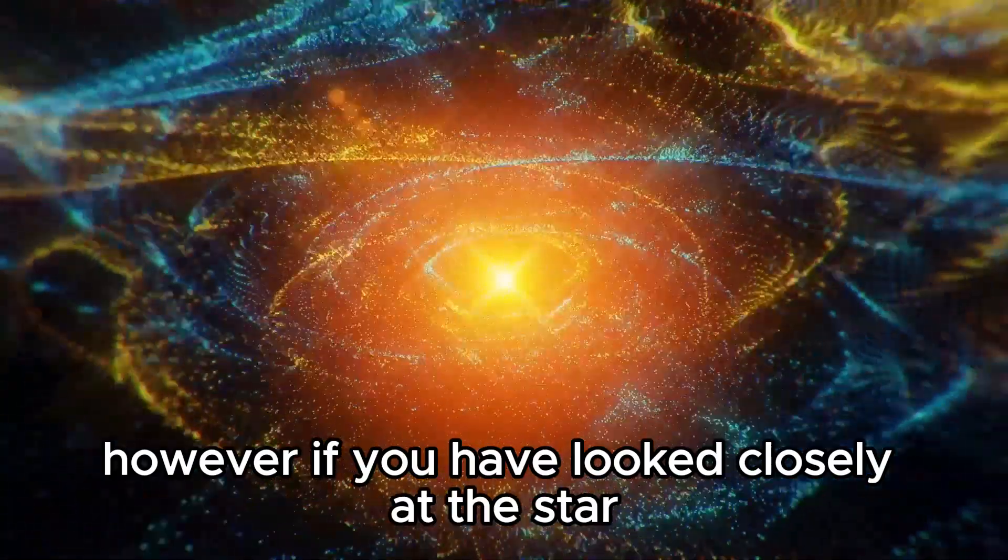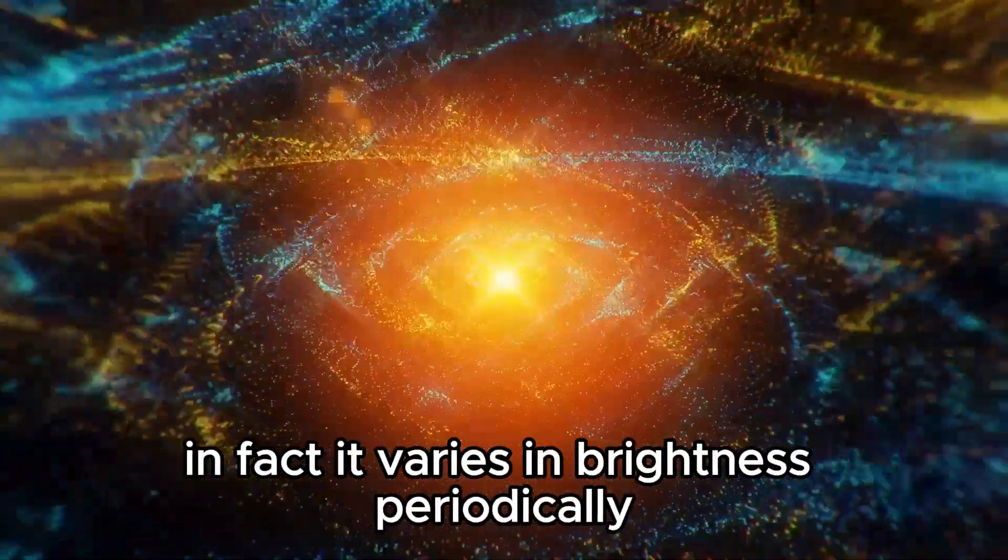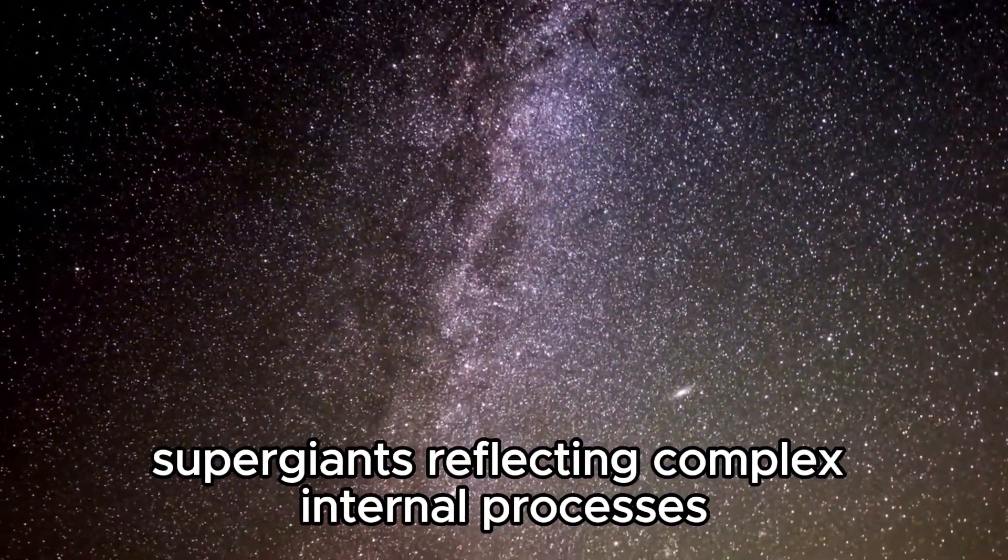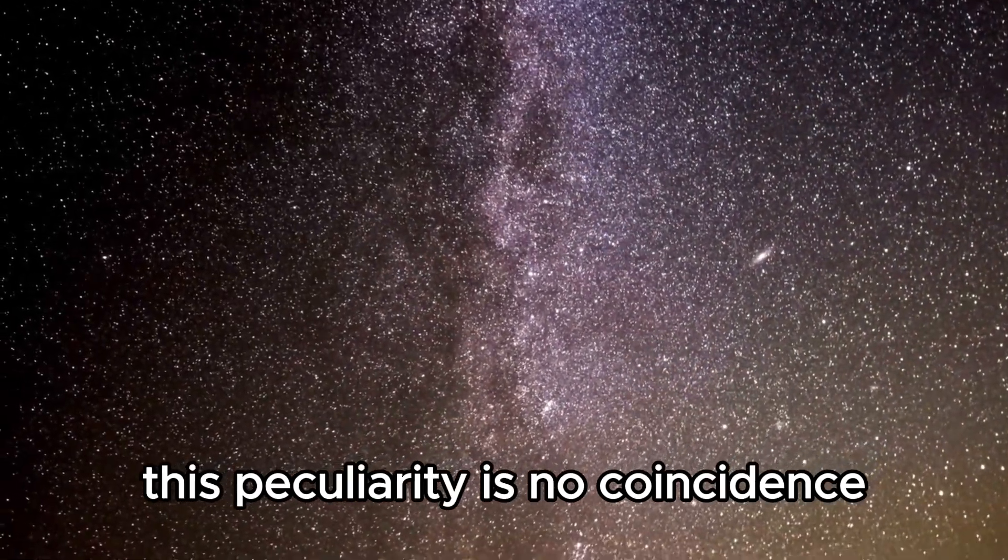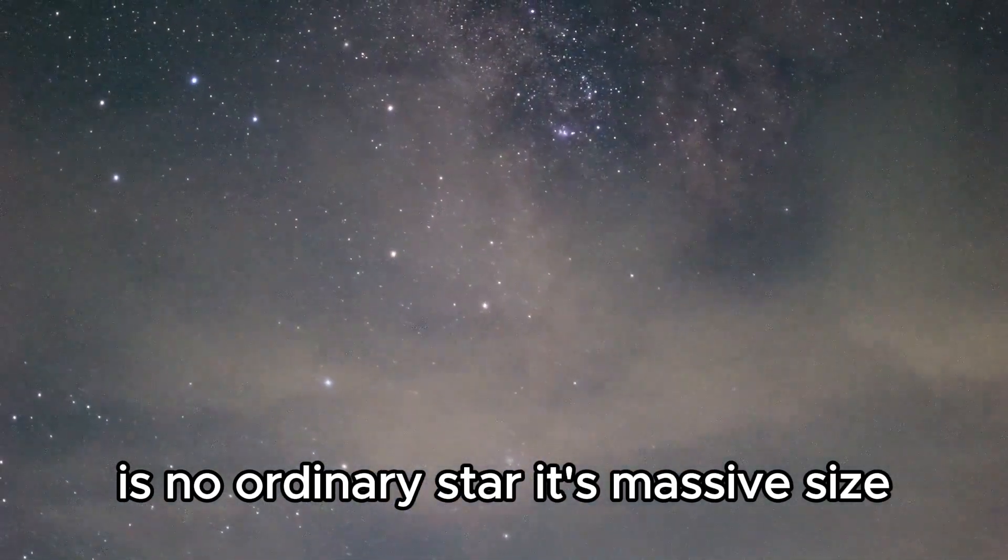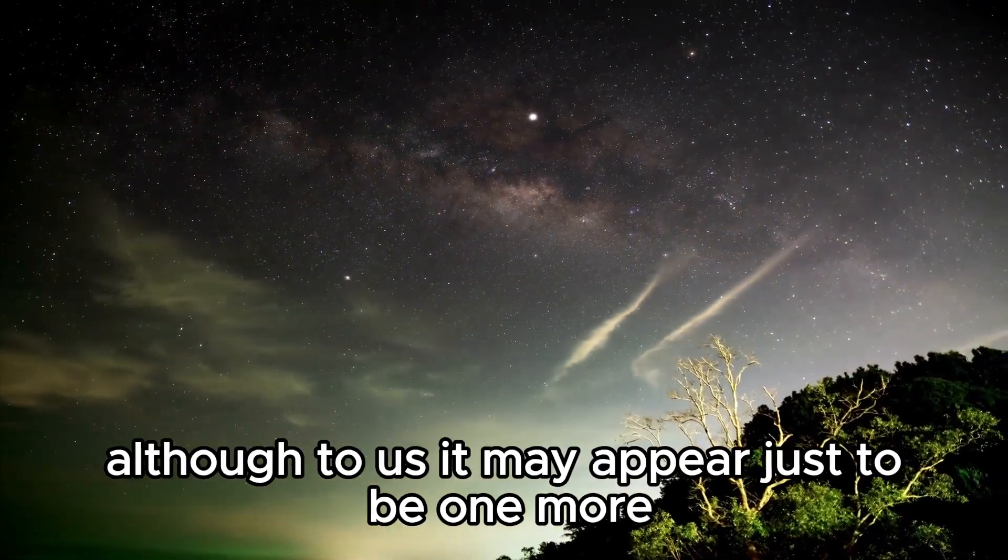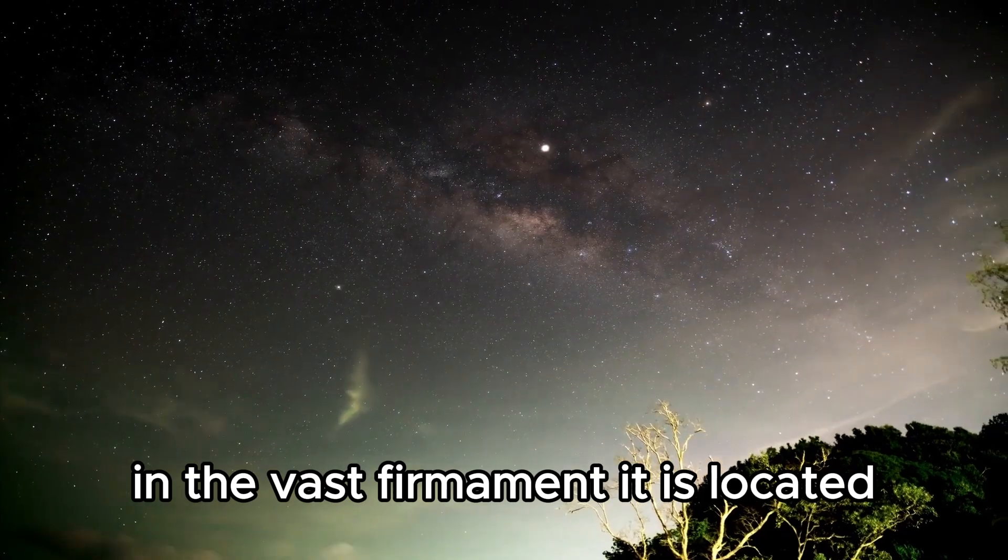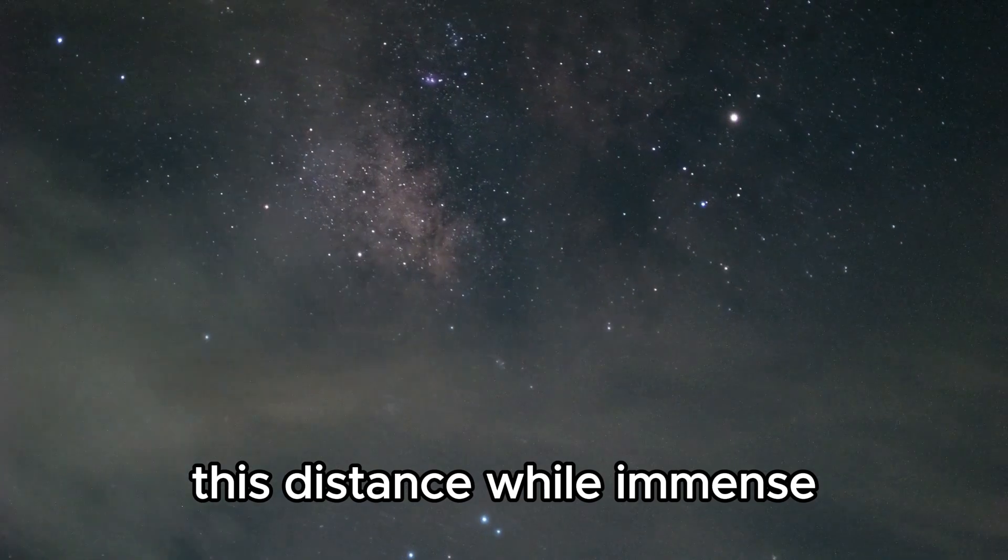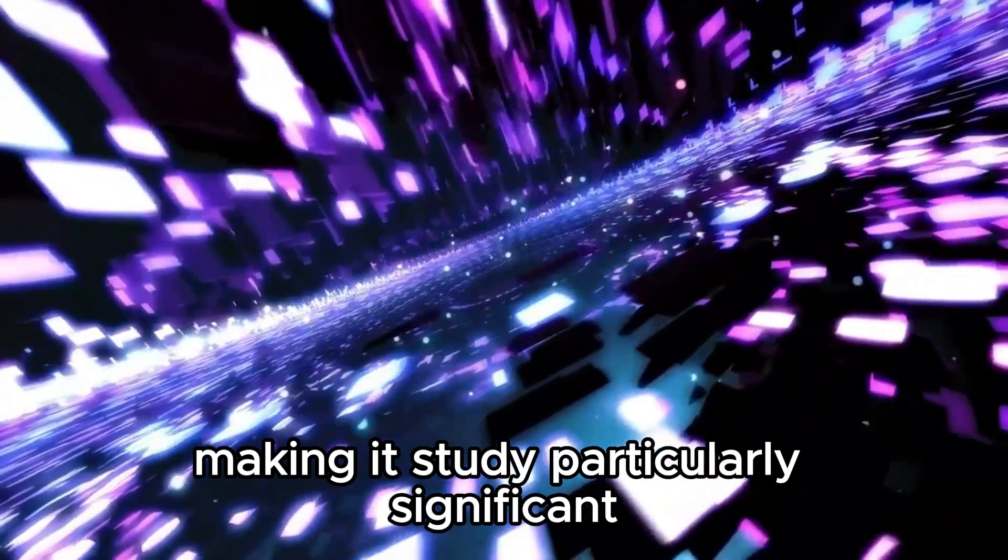However, if you have looked closely at this star, you will have noticed that it does not remain constant. In fact, it varies in brightness periodically. This variability is a characteristic feature of red supergiants, reflecting complex internal processes. This peculiarity is no coincidence since Betelgeuse, as the star is called, is no ordinary star. Its massive size and advanced stage of evolution set it apart from the myriad of stars in the night sky. Although to us it may appear just to be one more in the vast firmament, it is located at a distance of more than 640 light-years from us. This distance, while immense, places Betelgeuse relatively close in astronomical terms, making its study particularly significant.